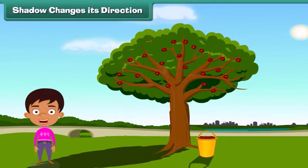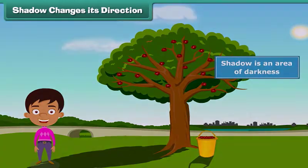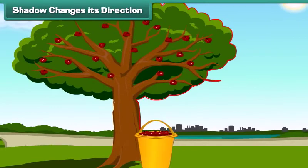Hi, friends. At first, let's discuss what a shadow is. Actually, a shadow is an area of darkness which is formed when the light is blocked by an object.